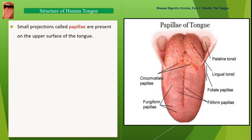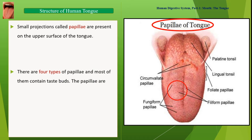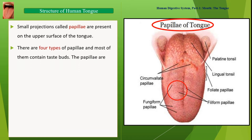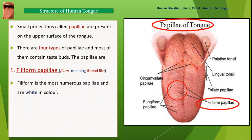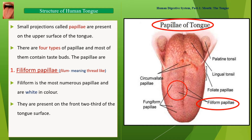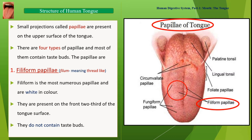Small projections called papillae are present on the upper surface of the tongue. There are four types of papillae, and most of them contain taste buds. Filiform papillae are thread-like, the most numerous, and are white in color. They are present on the front two-thirds of the tongue surface and do not contain taste buds.